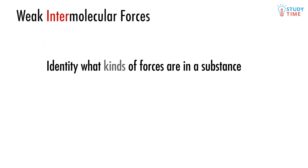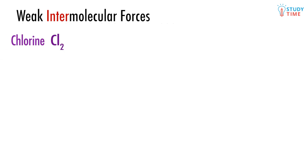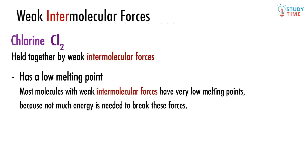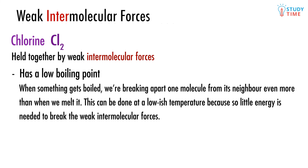Not only do you need to be able to identify what kinds of forces are in a substance, but you need to be able to talk about what that means for the substance. We know that chlorine, Cl2, is held together by weak intermolecular forces. This means that chlorine has a low melting point. Most molecules with weak intermolecular forces have very low melting points, because not much energy is needed to break these forces. Chlorine also has a low boiling point, explained using the same logic — when something gets boiled, we're breaking apart one molecule from its neighbour, which can be done at a low temperature because so little energy is needed.